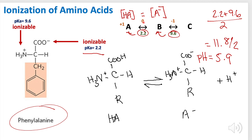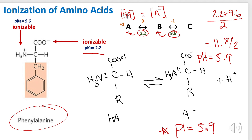This value of 5.9 has a special designation called PI (isoelectric point), which represents the pH at which the amino acid exists as a zwitterion with zero net charge. This PI value will differ for various amino acids because R groups can be ionizable. For all non-ionizable R groups, the PI will always be 5.9, but ionizable R groups will yield a different PI.